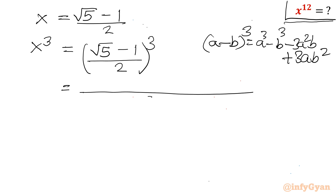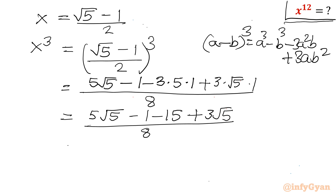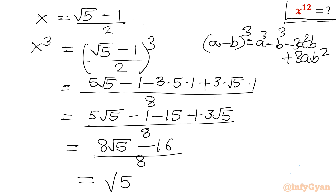The denominator will be 2³, which is 8. So (√5 minus 1)³: √5 cubed is 5√5, minus 1³ which is 1, minus 3 times (√5)² which is 5 times b, plus 3 times √5 times 1. This gives us 5√5 minus 1 minus 15 plus 3√5, all over 8. So 5 plus 3 is 8, giving 8√5 minus 16 divided by 8, which I can write as √5 minus 2. This is the value of x³.